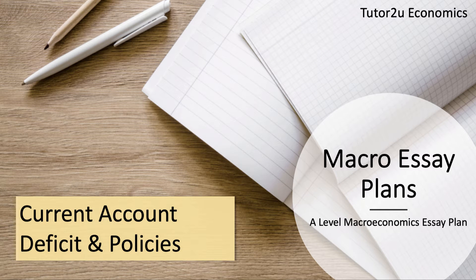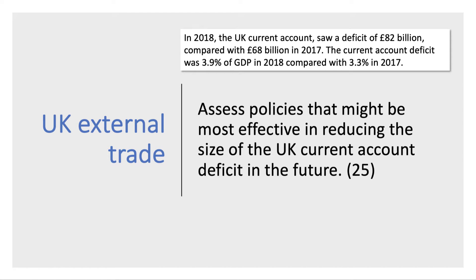Welcome to another in our series of essay plans for 2019. This is macroeconomics and it looks at the current account deficit and policies. Some data here: the deficit was £82 billion in 2018, up on the previous year, and the deficit expressed as a share of national output was 3.9% of GDP in 2018. The question asks: assess policies that might be most effective in reducing the UK current account deficit in the future.